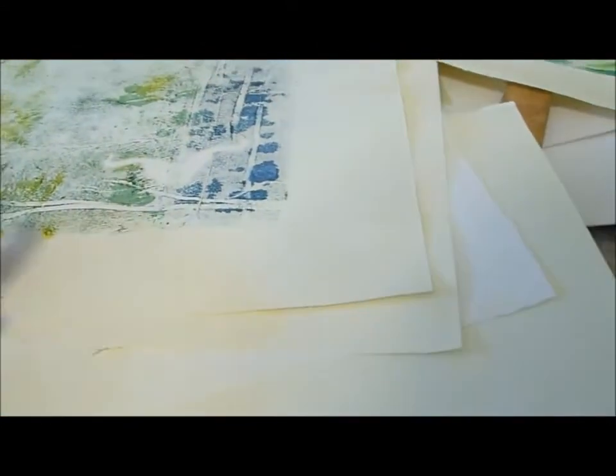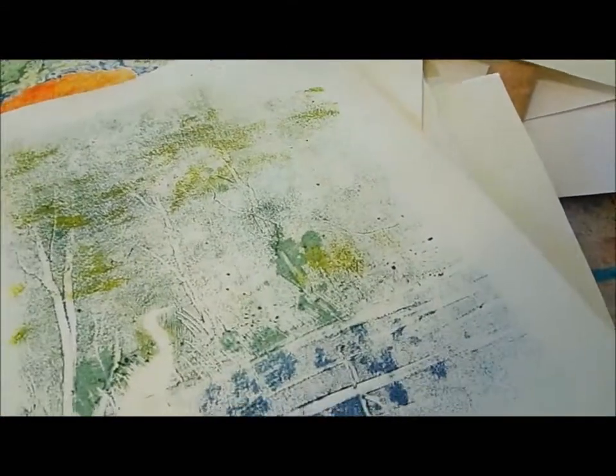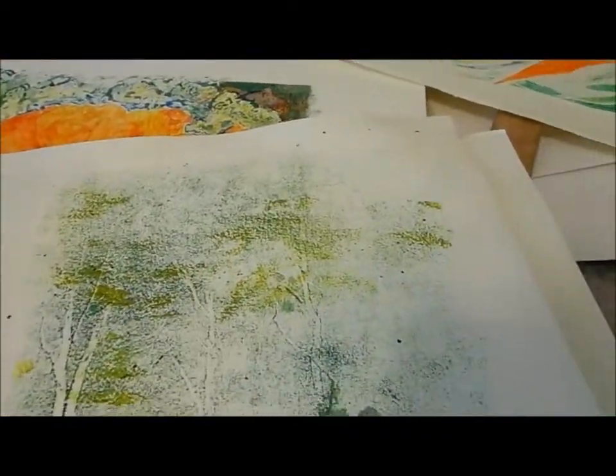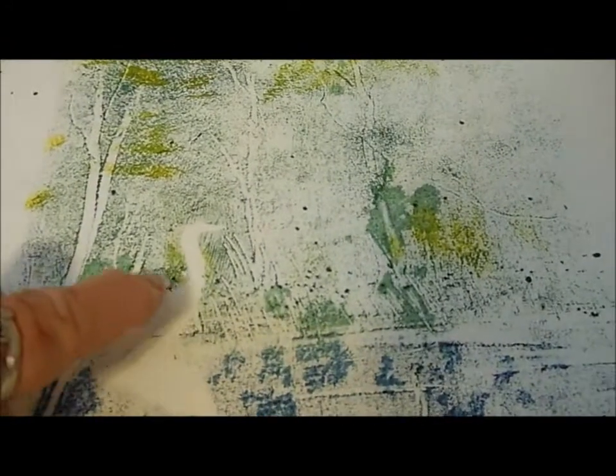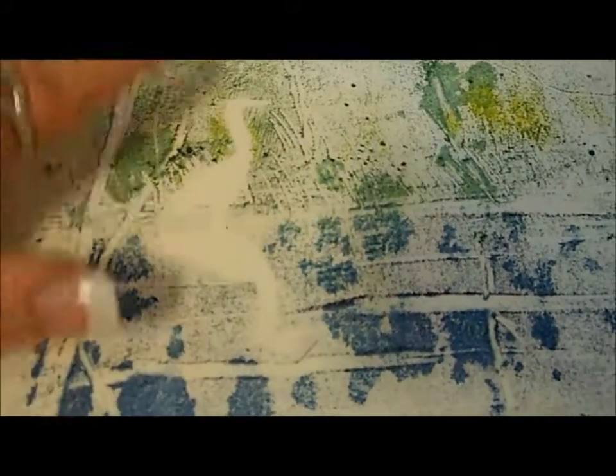This is one that I rolled on a plate and put a stencil of this bird there. Both the bird and the shadow. And then I rubbed it. And I plan to finish this with a lot of dry media. Maybe some pastels or pastel pencils. Watercolor pencils to bring out the shapes in those trees.